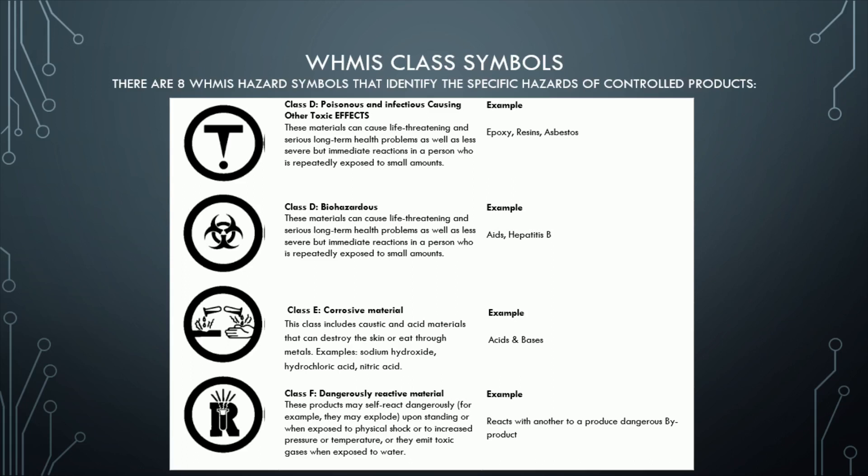Class E: Corrosive Material. This class includes caustic and acid materials that can destroy the skin or eat through metals. Examples: sodium hydroxide, hydrochloric acid, nitric acid, and other acids and bases.